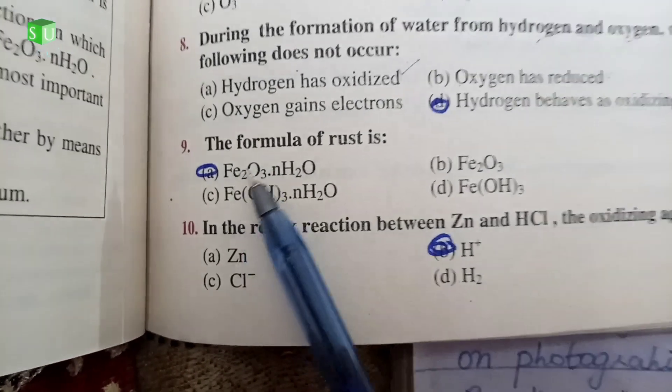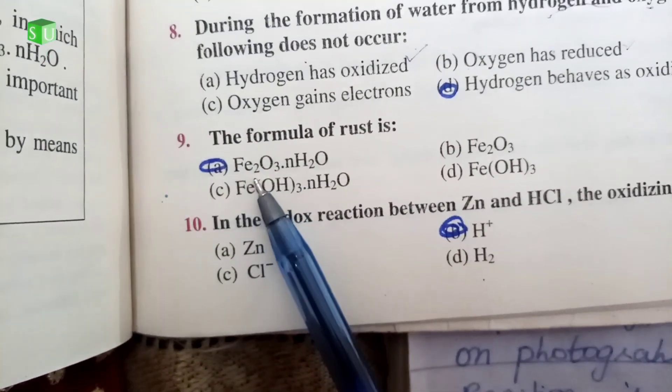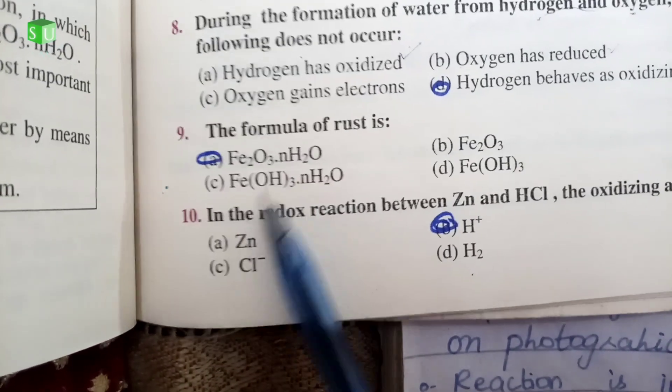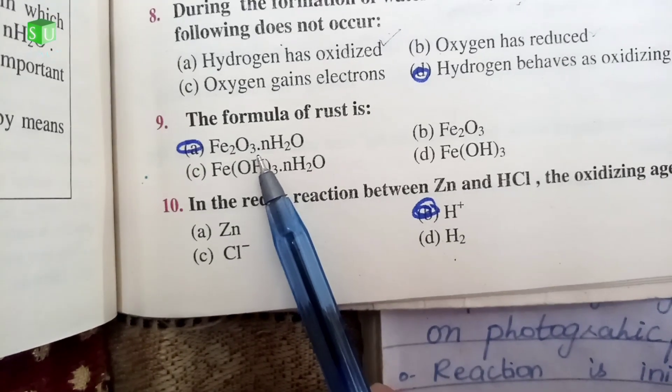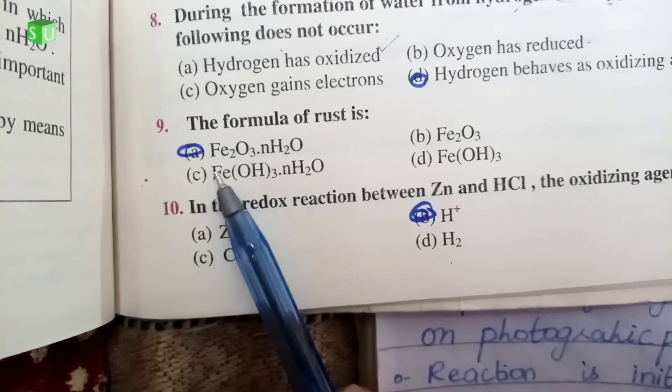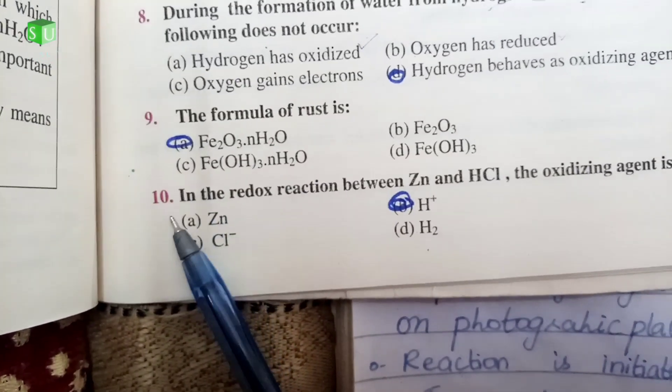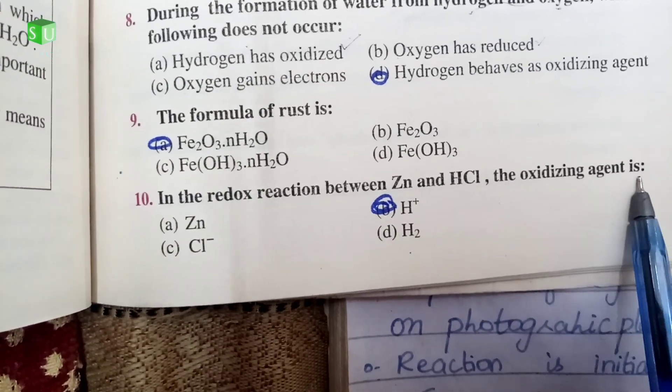Number 9 is the formula of rust. The formula of rust is Fe2O3 dot nH2O. This is the formula of rust. If you have a short question in your answers, remember it. This is the formula of rust.